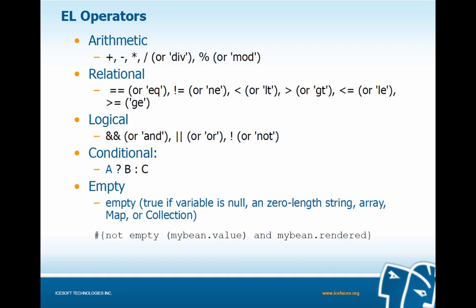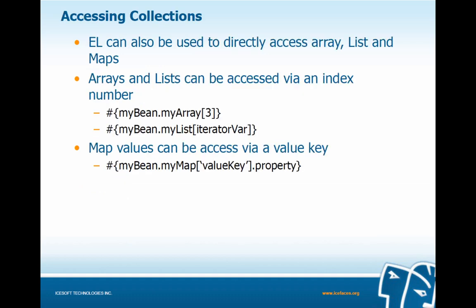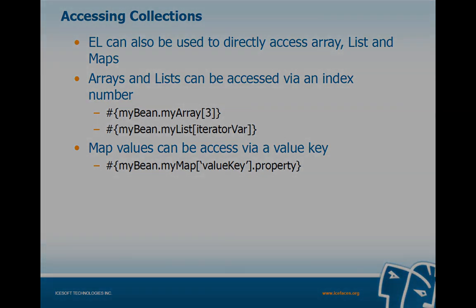In this example, we have a rendered attribute — whether true or false, it will either render or not render the component. In this case, if mybean.value is not empty and mybean.rendered returns true, this EL expression evaluates to true and we render our component. Expression language can also be used to directly access arrays, lists, and maps. Arrays and lists can be accessed via an index number, whereas map values can be accessed via a value key.